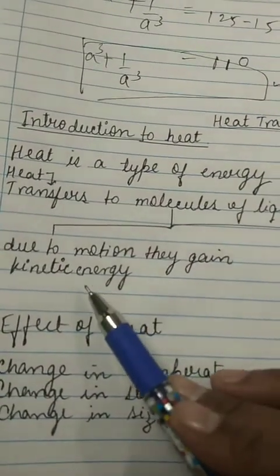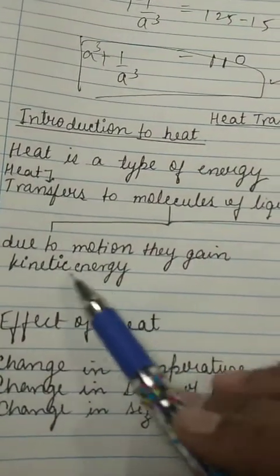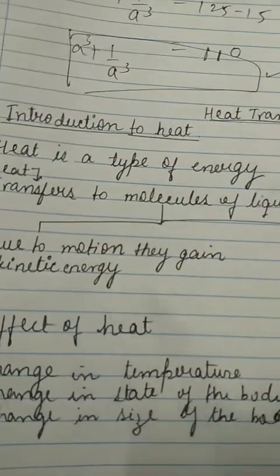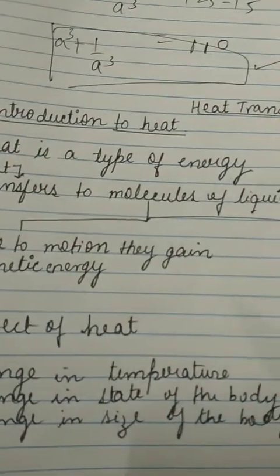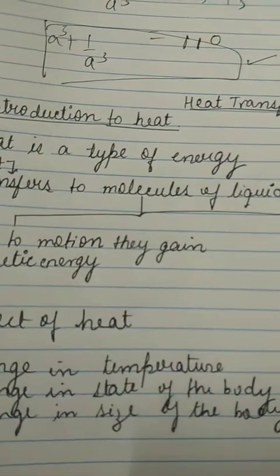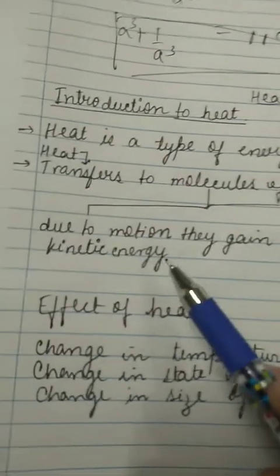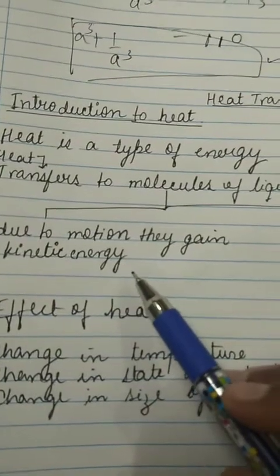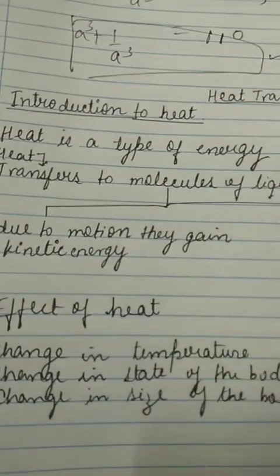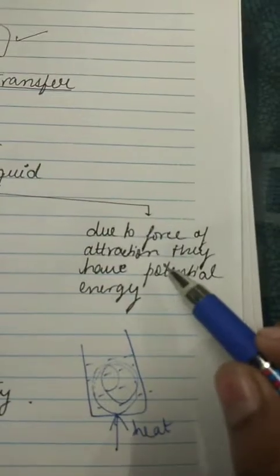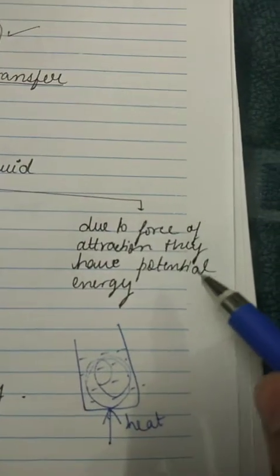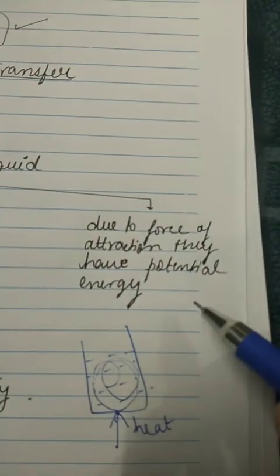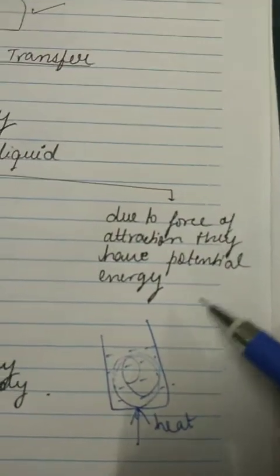The molecules gain energy — kinetic energy — and that is why they come into motion. They come into random motion, and because they also have a force of attraction between them, they have potential energy due to that.